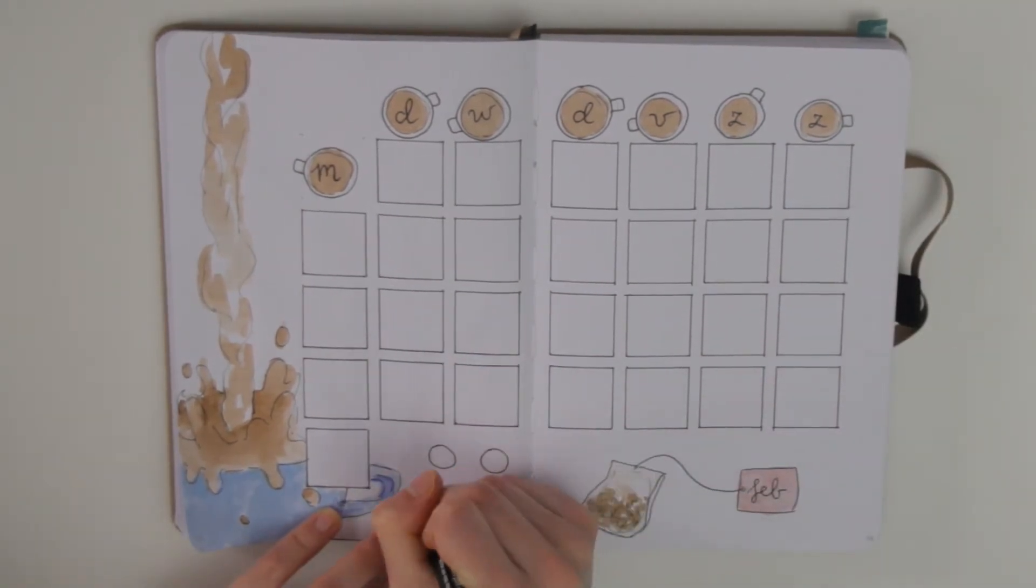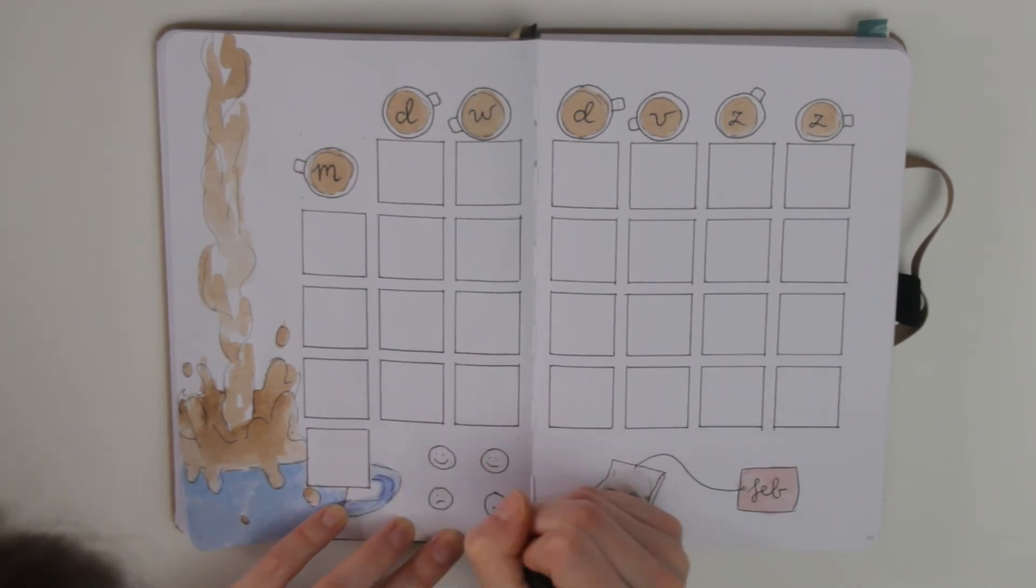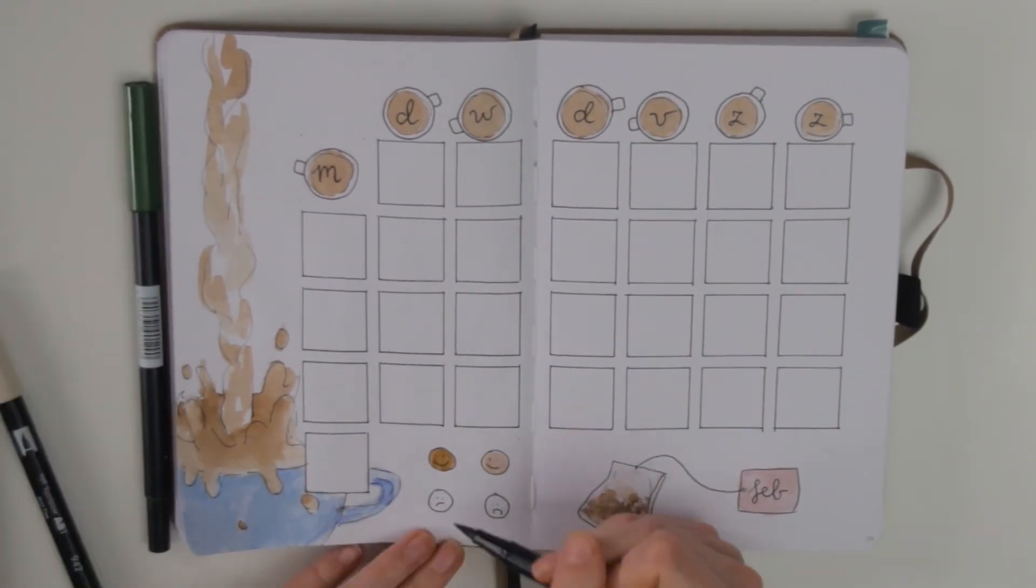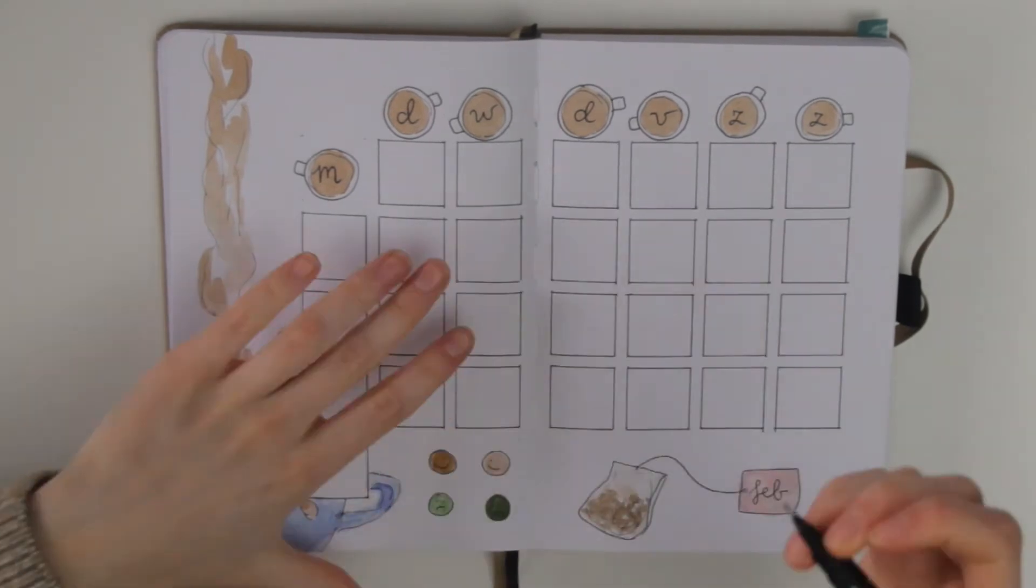And like I said earlier, this is also going to be my mood tracker. So I just made a little legend and I'm just gonna color in each box according to my mood like I always do.